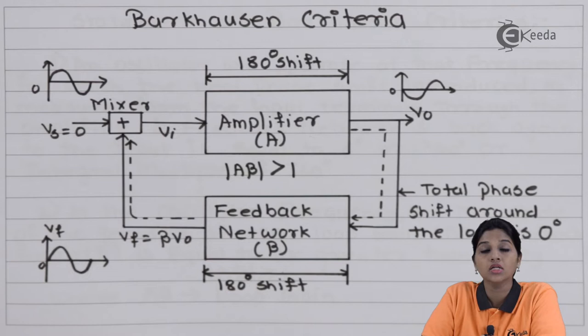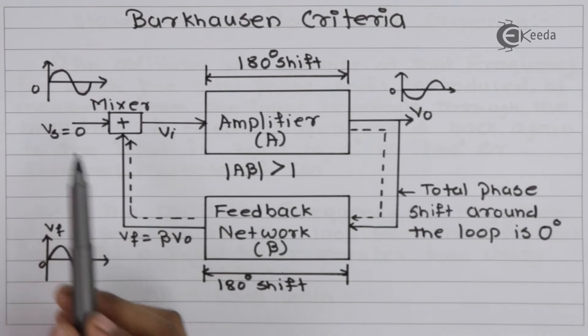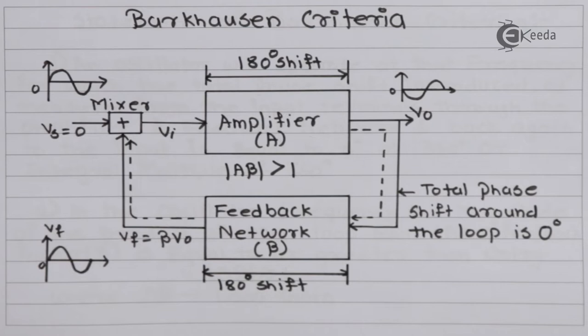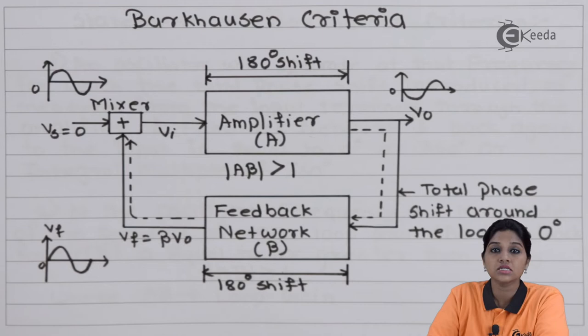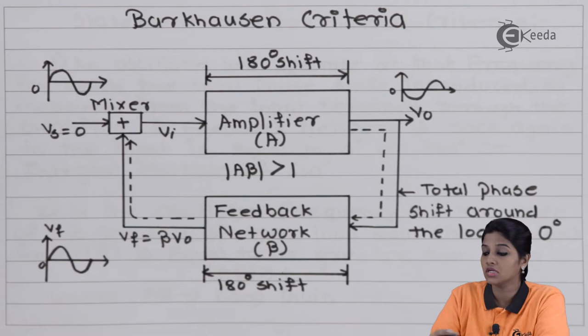From the block diagram, no input signal is applied. The amplifier has gain A and output V0. Since the amplifier provides a phase shift of 180 degrees, there is a phase difference between the input and output of the amplifier — the output is a phase-inverted version of the input. This output V0 acts as the input to the feedback network, which has feedback factor β. The feedback network then introduces an additional phase shift of 180 degrees, so that the total phase shift around the loop becomes 0 or 360 degrees.